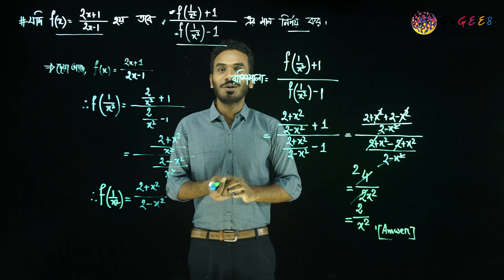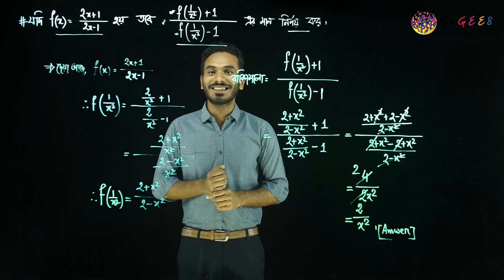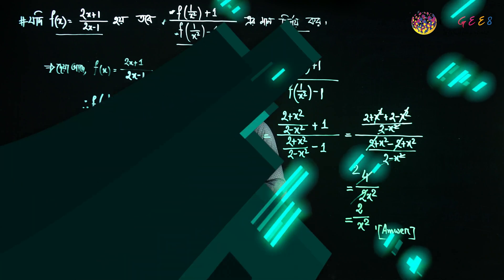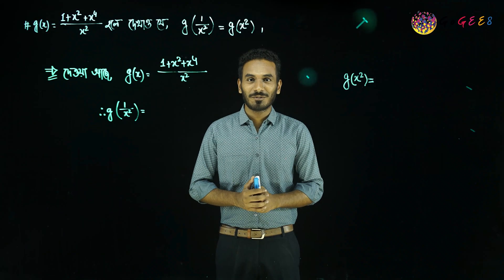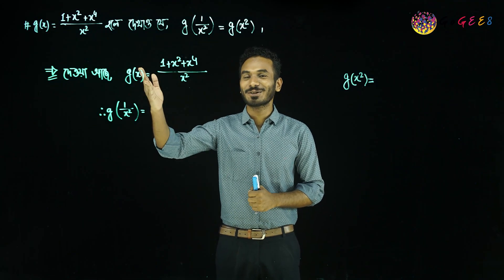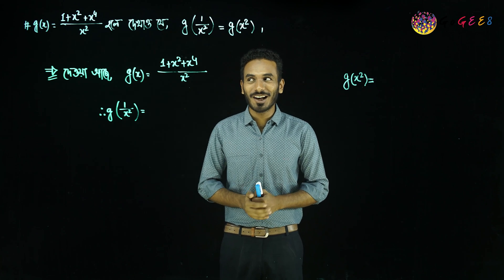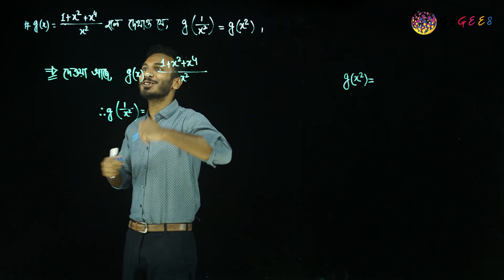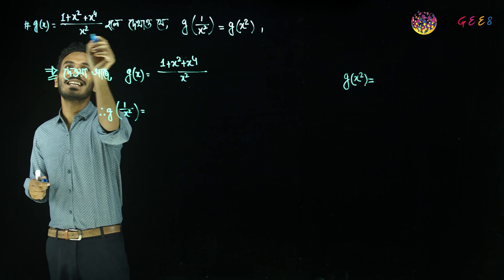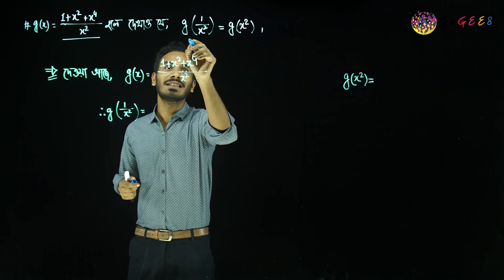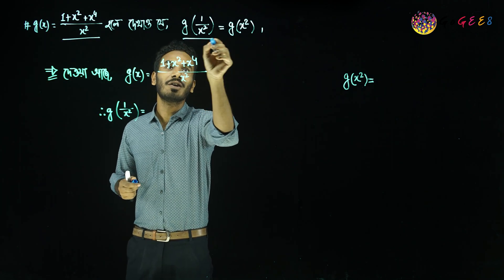Friends, you have been able to understand this mathematical solution. Friends, on your screen you are seeing a mathematical problem. It is said here: if g(x) equals 1 plus x square plus x to the power 4 divided by x square is a function, then we are asked to find g of 1 by x square.